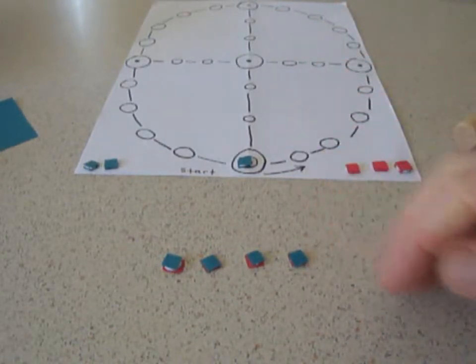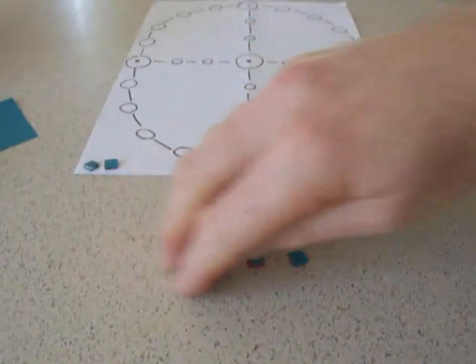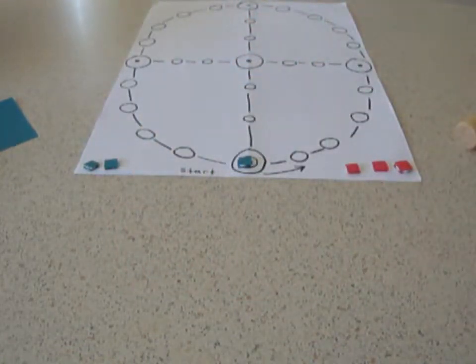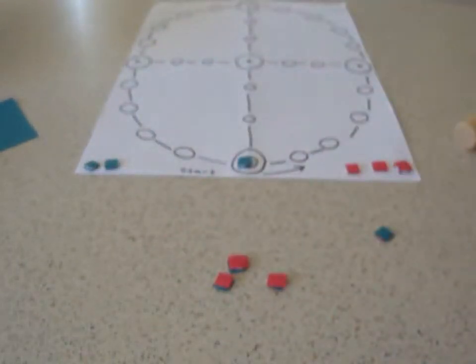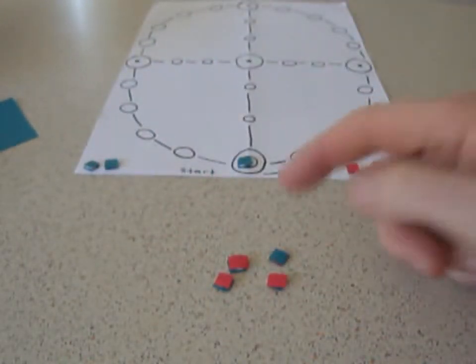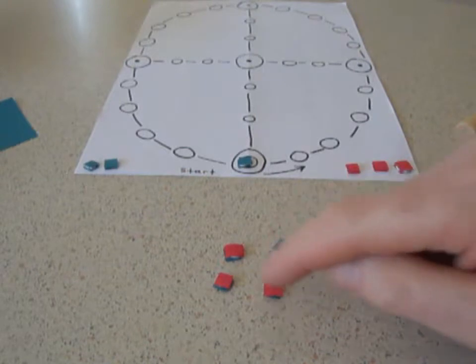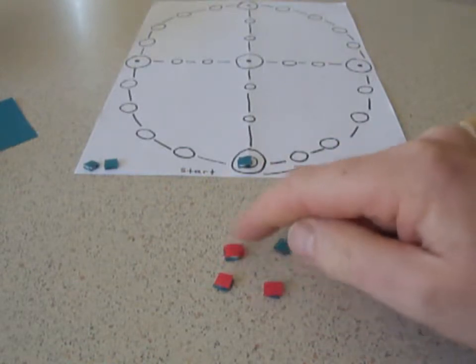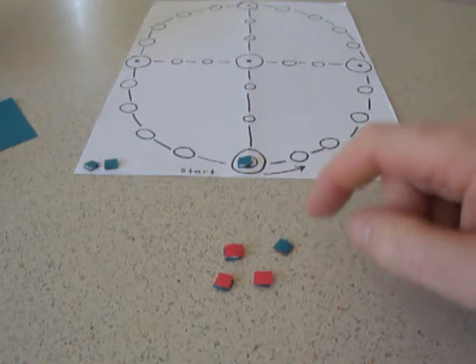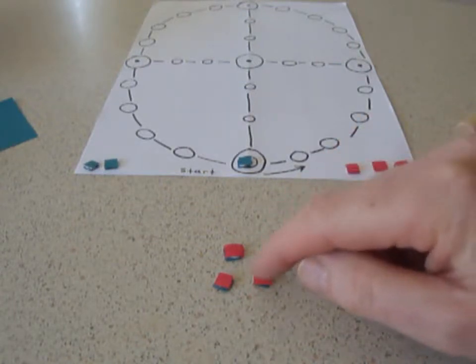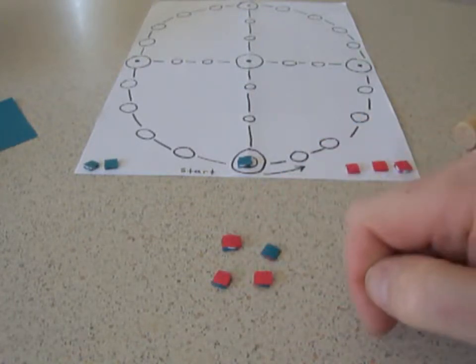So it depends on whose turn it is. On your turn, pick up the dice, the counters, shake, and roll. Red's turn, move one counter, one red counter, three spaces. Blue's turn, this would mean move one blue counter, one space.